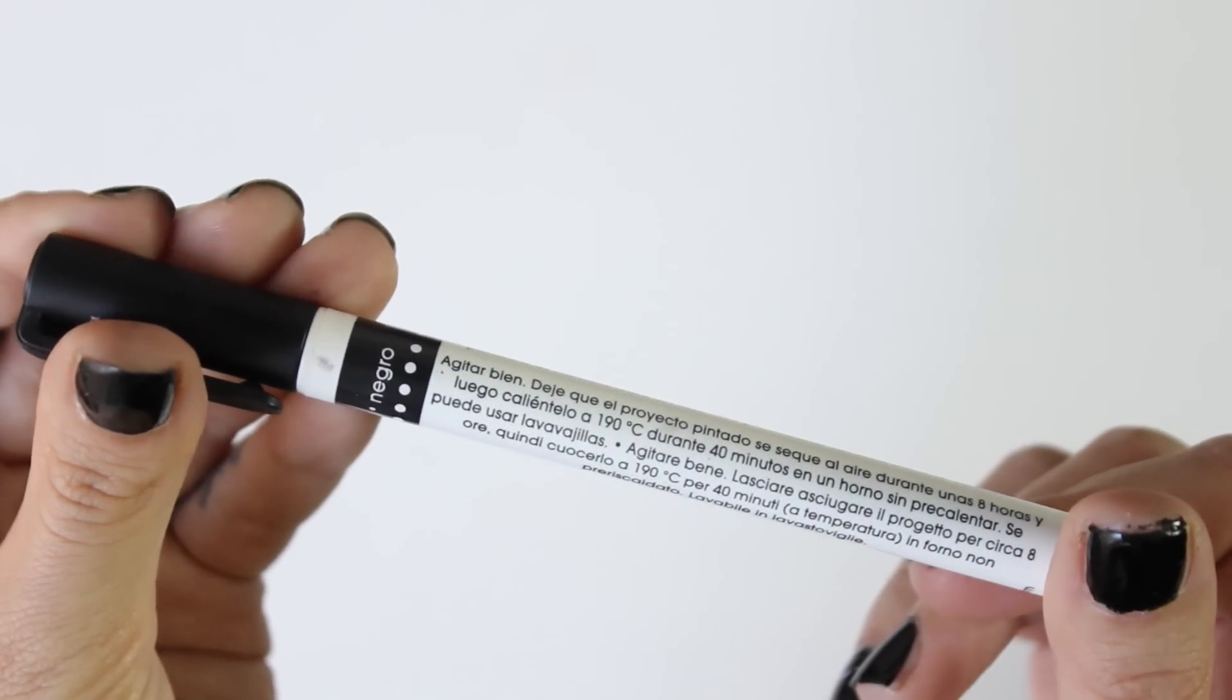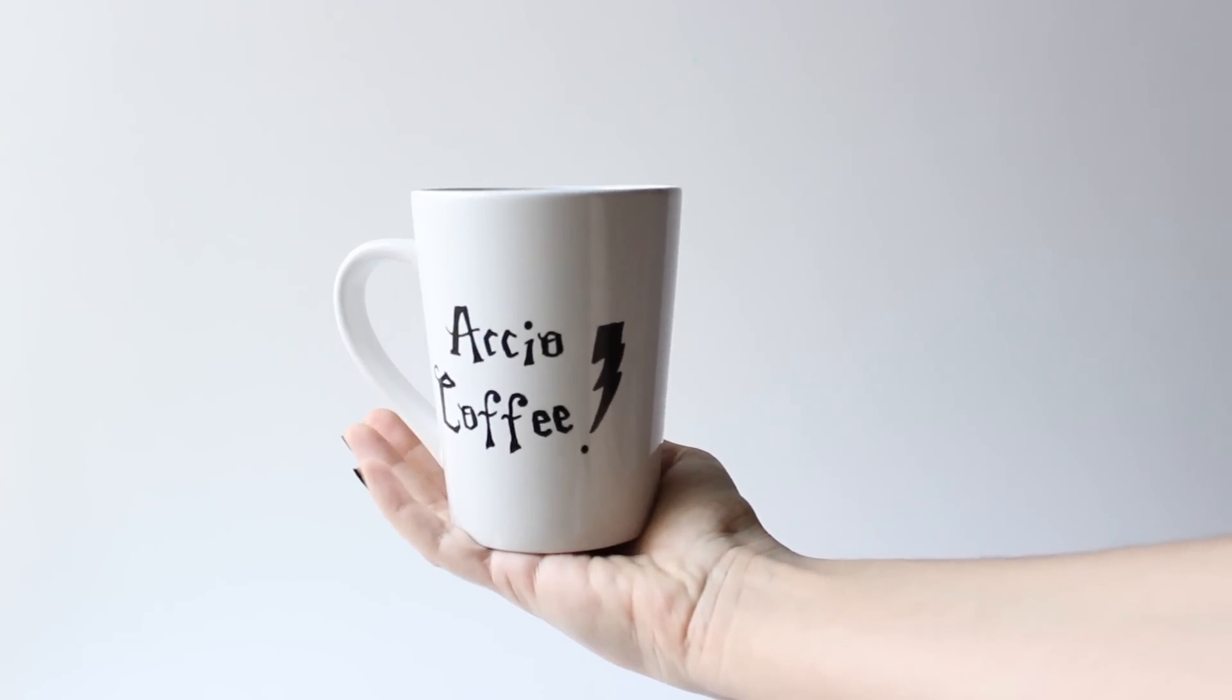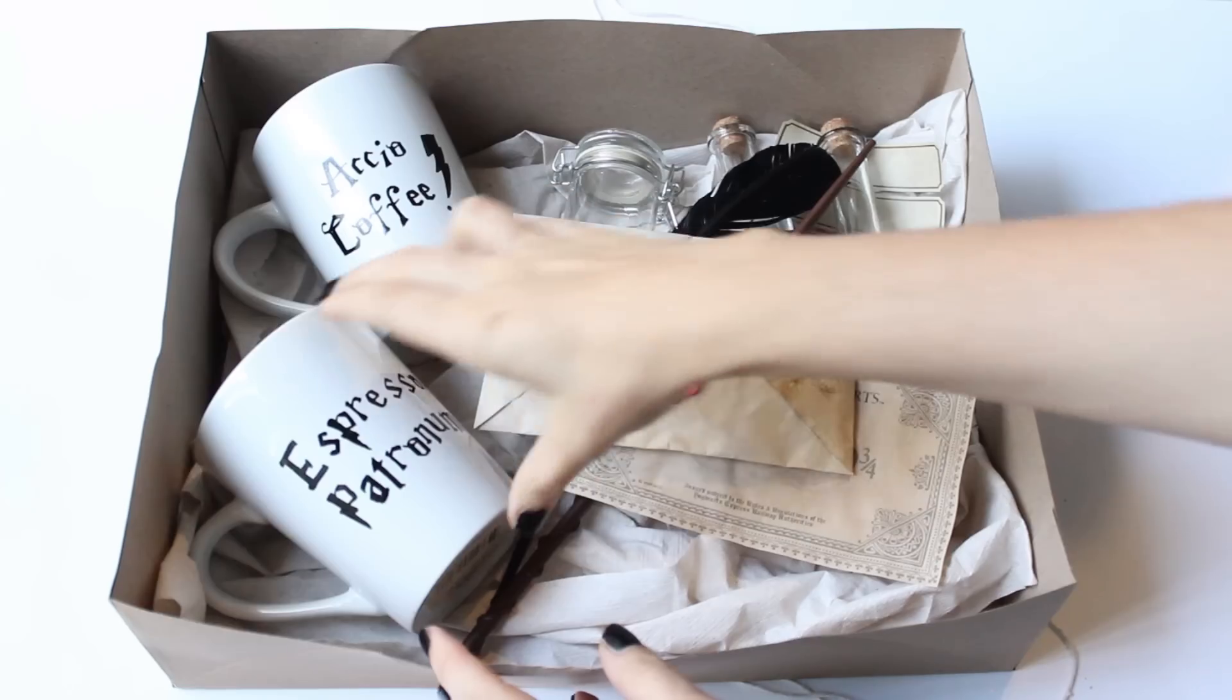Mine said that I have to air dry the mug for eight hours and then bake it for 40 minutes at 355 degrees Fahrenheit without preheating the oven. When it's done, remove the mug only when it's back to room temperature and now it's soap proof.